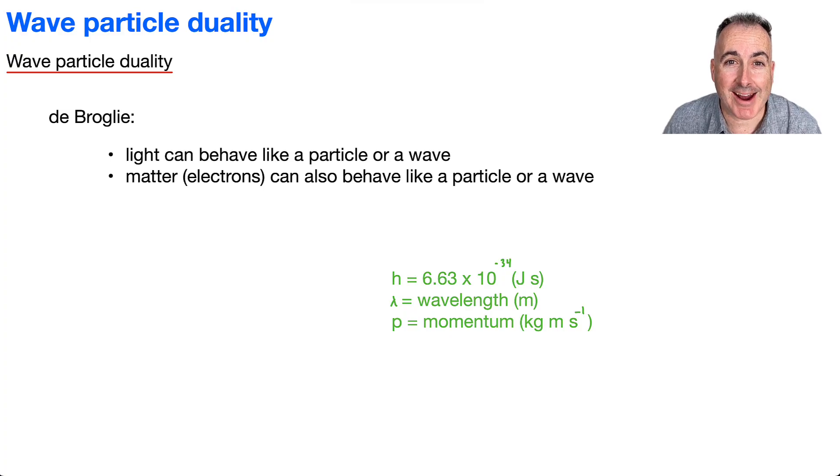Well, it turns out matter can do the same thing. So de Broglie figured this out, that just like light can behave like a particle or a wave, it turns out matter can also do the same thing. For example, electrons, they can behave like particles, they can behave like waves.